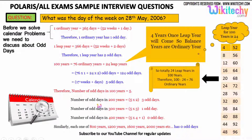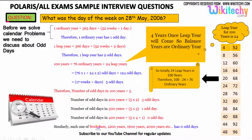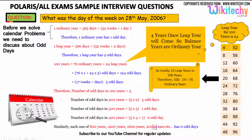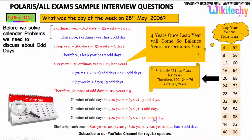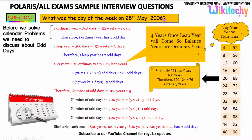Every 400 years will have 0 odd days. Similarly for 800, 1200, 1600, and 2000 years, we get 0 odd days. So for 2000 years, there are 0 odd days. From 2000 years onward, we need to calculate separately for remaining years.